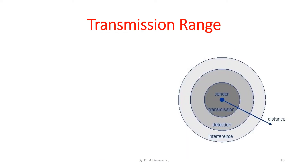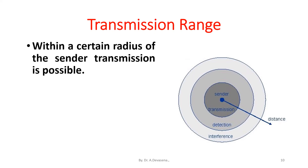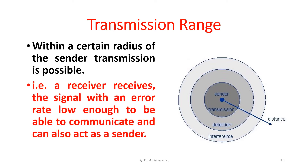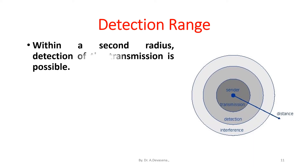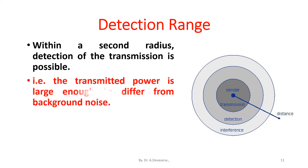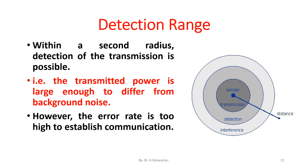Transmission range: within a certain radius of the center, transmission is possible — that is, a receiver receives the signal with an error rate low enough to communicate and can also act as a center. Detection range: within a second radius, detection of the transmission is possible — that is, the transmitted power is large enough to differ from background noise; however, the error rate is too high to establish communication.